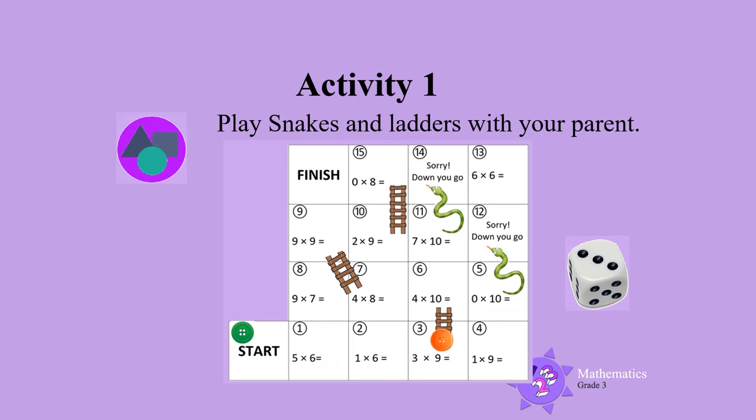Move your counter 3 spaces. What is the answer to 3 times 9? 3 times 9 is 27.